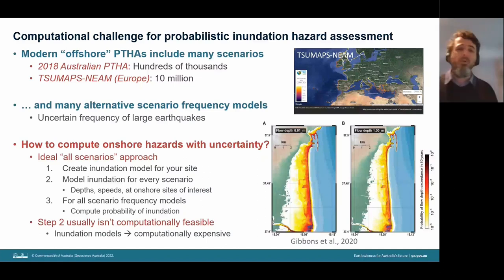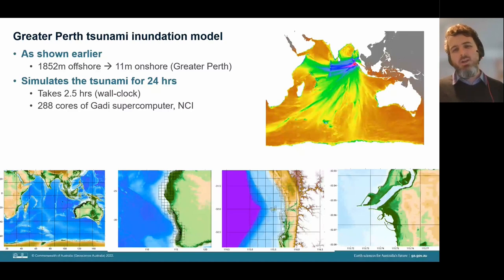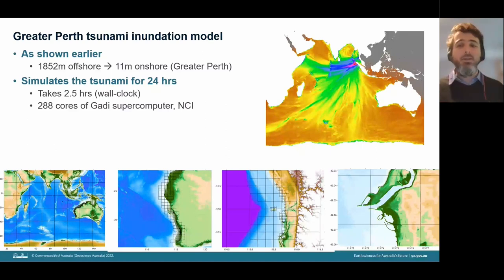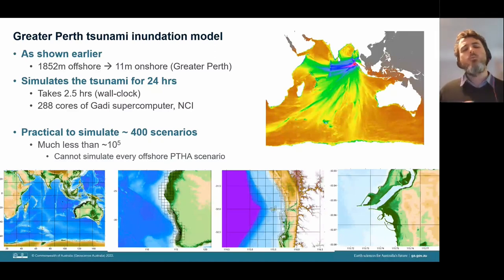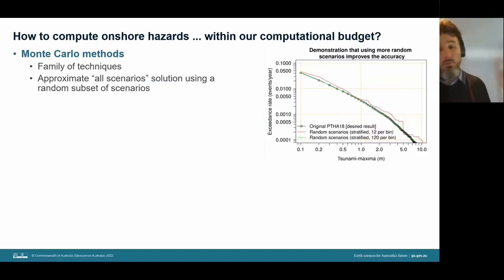European colleagues using GPU tsunami codes can simulate each scenario in about 25 minutes using very high performance computing, handling tens of thousands of scenarios — but still far from every scenario in the PTHA. In GA's greater Perth inundation model, simulating tsunami for about 24 hours takes about 2.5 hours of wall clock time using 288 cores of the Gadi supercomputer. With a given computational budget, it's practical to simulate around 400 scenarios — far less than hundreds of thousands.